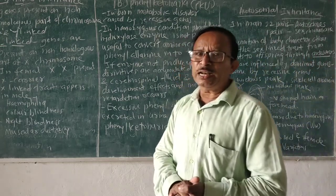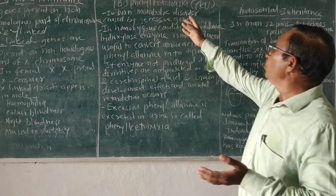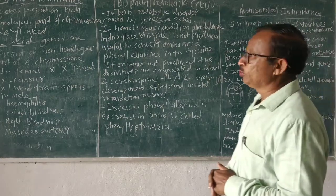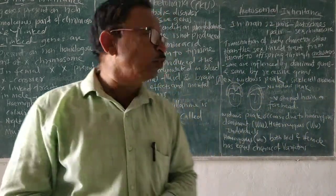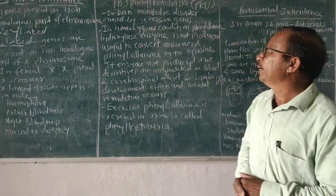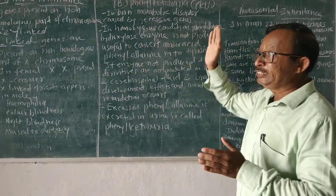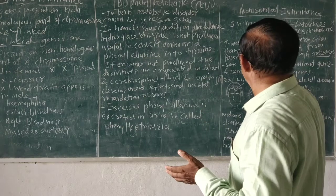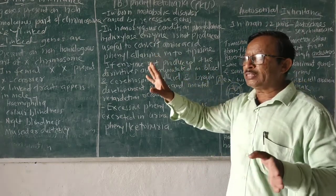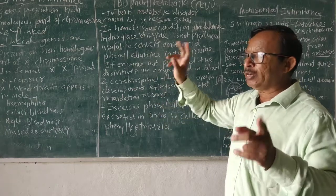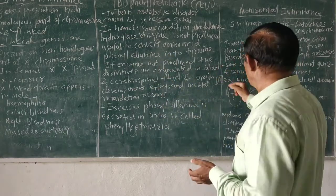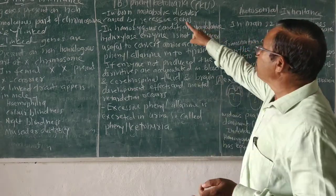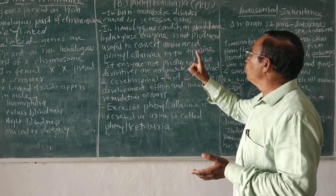Another example is phenylketonuria, also called PKU. It is a born metabolic disorder caused by recessive genes. In the case of widow's peak, whenever there is a homozygous dominant (WW) or heterozygous (Ww) condition, there is a widow's peak. Whenever there are recessive characters (ww), there is no widow's peak. PKU is controlled by recessive genes in the homozygous condition.